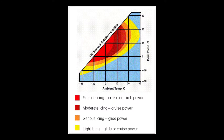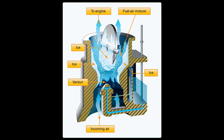Some things to know about carburetor icing: the process of carburetion involves air flowing through the carburetor and mixing with fuel. As the fuel vaporizes into the air and flows through the restriction in the carburetor, the temperature drops due to the pressure drop inside. That can reduce the temperature of the incoming air by as much as 33 degrees Celsius.